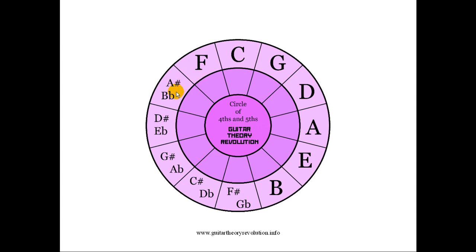Then we get GCF, which I remember as 'get close friends' or 'get cool friends.' Next we get the sharps and flats. Remember, this is just one note but it has two names — it can be either an A sharp or a B flat. It lies between the A and the B: A, A sharp, B. Or in the opposite direction: B, B flat, A. It's the same thing.